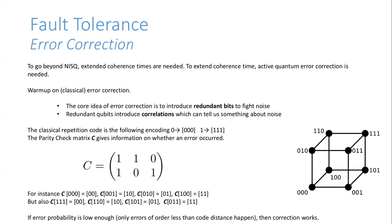This is great for classical computers, but the problem is it involves measuring our bits — we measure all three and do a majority rule. We can't do that with qubits because we're not allowed to measure them. We also know from the no-cloning theorem that we can't copy qubits with a unitary — it's impossible to copy an arbitrary state. However, if we have orthogonal states, we can copy them: we can map |00⟩ to |00⟩ and |1⟩|0⟩ to |1⟩|1⟩.